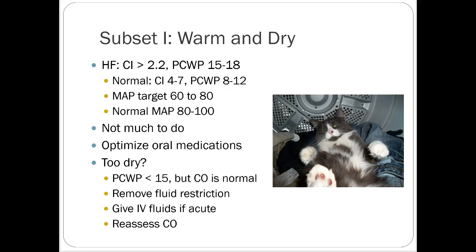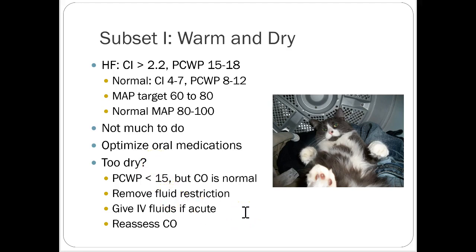Subset one is the warm and dry patient — perfusing and not in fluid overload. There's not a lot to do. Maybe optimize medications: can you go up on their ACE inhibitor or beta blocker? Are they slightly fluid overloaded? Optimize the diuretic. Or are they too dry? If they've overdone their diuretic, you might remove some fluid restrictions and give IV fluids if needed to see if that improves things.